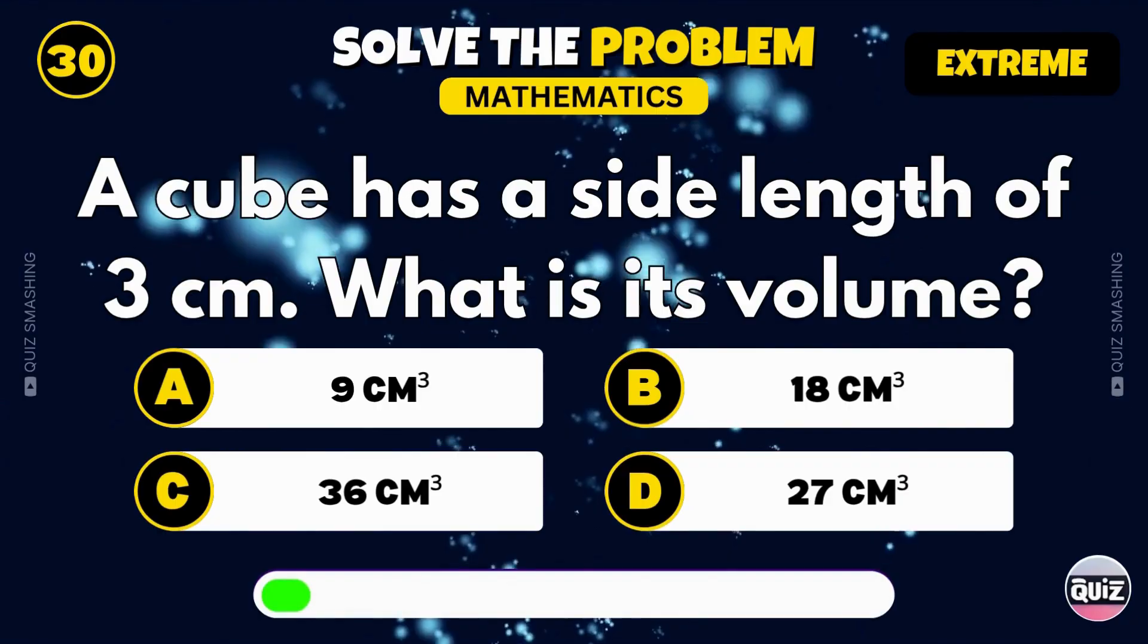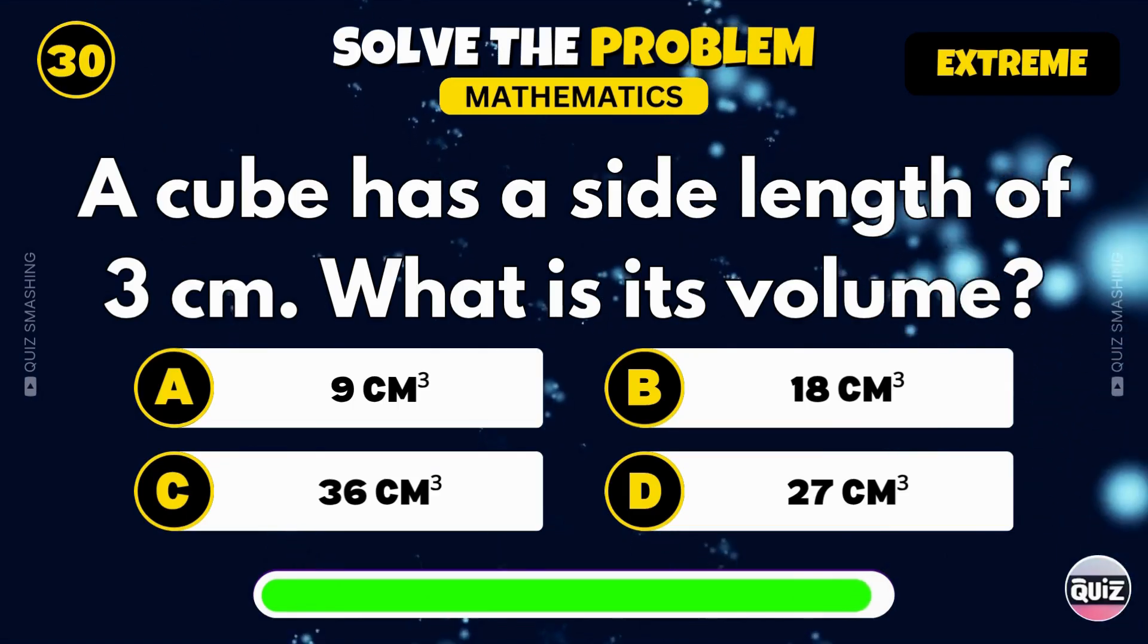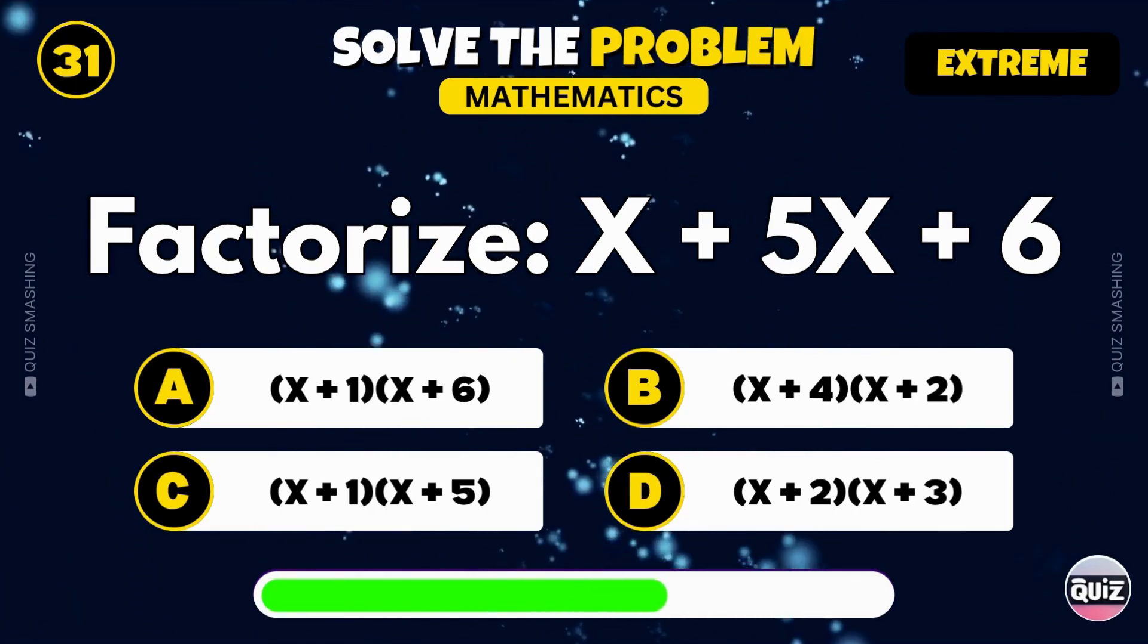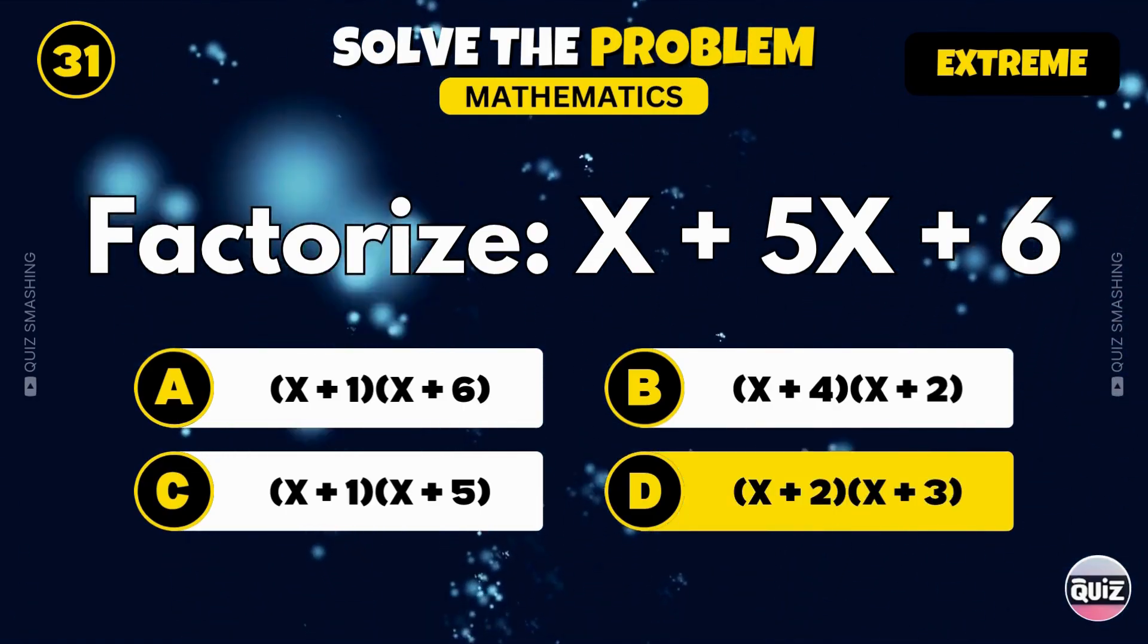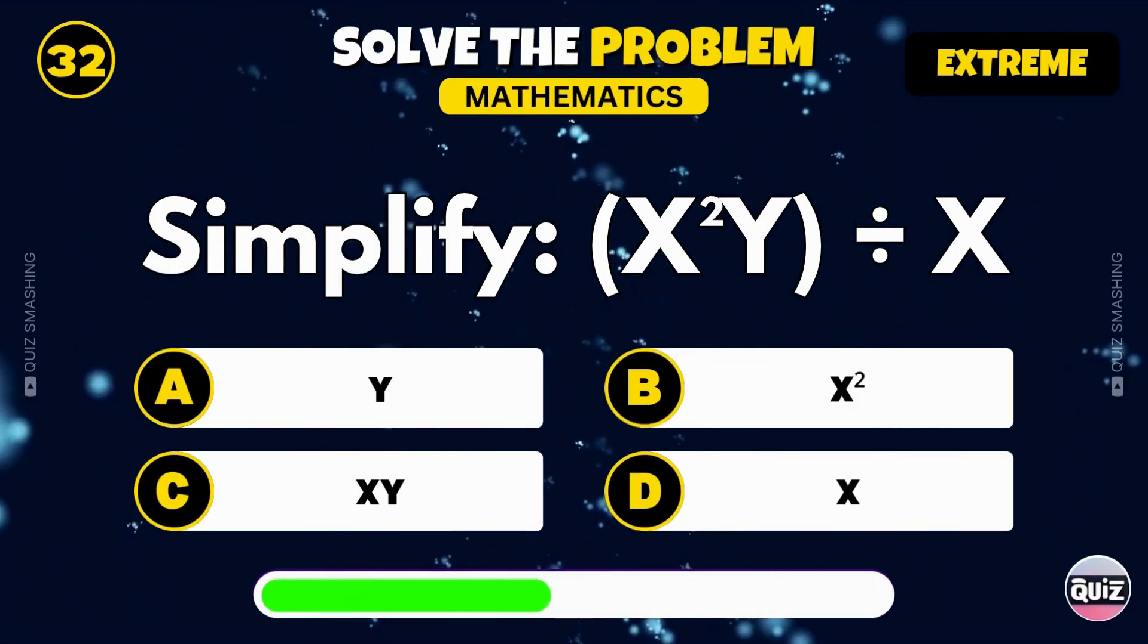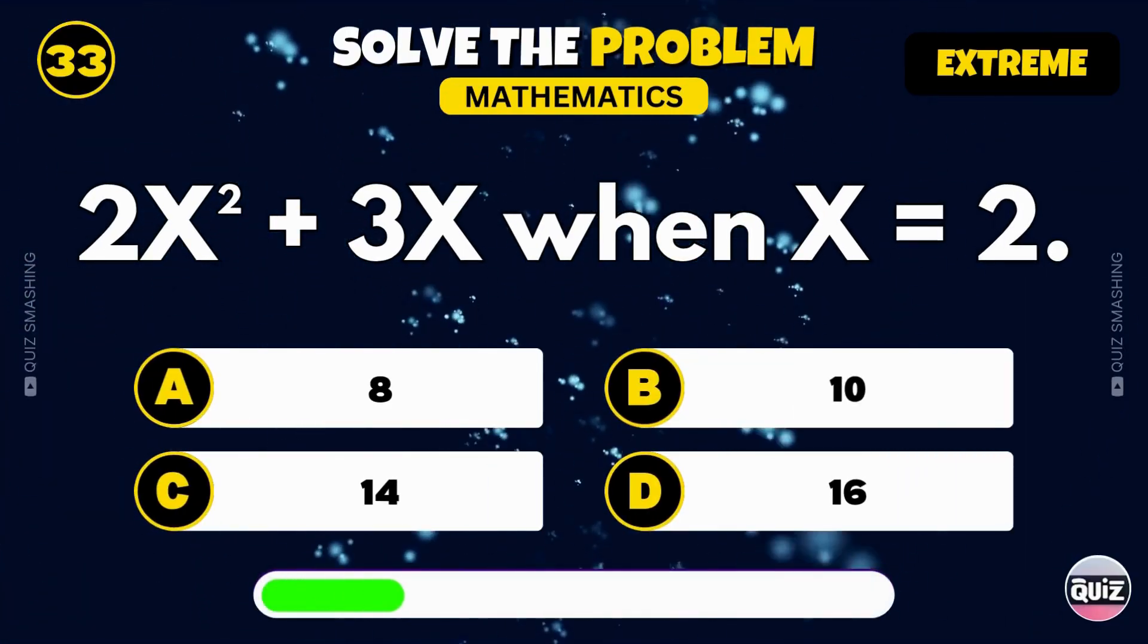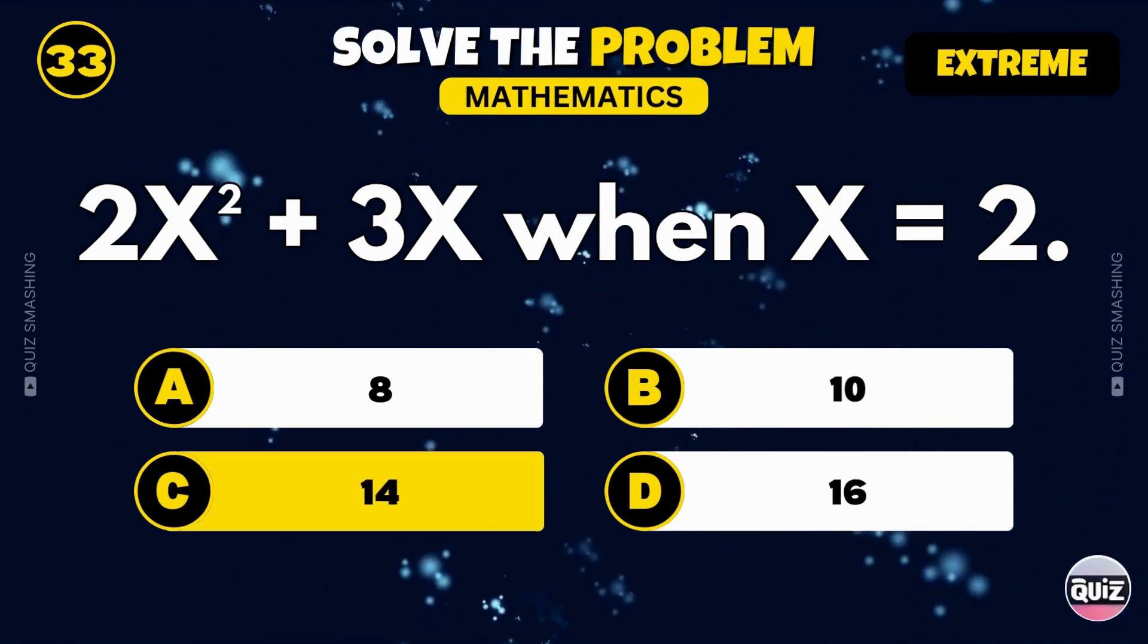A cube has a side length of 3 centimeters. What is its volume? The volume is 27 cubic centimeters. Factorize x squared plus 5x plus 6. That's open bracket x plus 2 close bracket times open bracket x plus 3 close bracket. Simplify open bracket x squared y close bracket divided by x. That becomes xy. Evaluate 2x squared plus 3x when x equals 2. The result is 14.